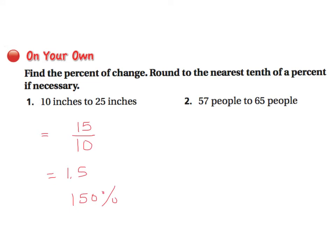57 people to 65 people. So if you subtracted 57 from 65, you're going to get a difference of 8. If you get a difference of 8, you divide that by the original, which is 57, and 8 divided by 57 would give you an increase of 0.14, which is approximately a 14% increase.